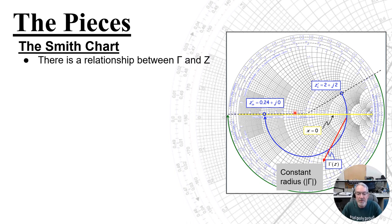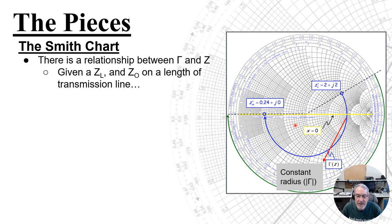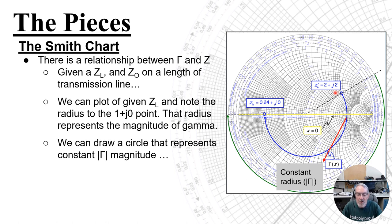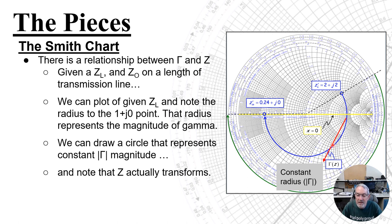There is a relationship between gamma and impedance for a given load impedance and characteristic impedance on a length of transmission line. We've normalized it to 50 ohms. We can plot a load impedance and note the radius that goes from the matching point to that impedance — that radius represents the magnitude of gamma. This radius is our magnitude of gamma, and we can draw a circle that represents the constant gamma. As we move around this circle, we are moving down the transmission line and our impedance is transforming, but this only works if we're following a constant gamma radius.